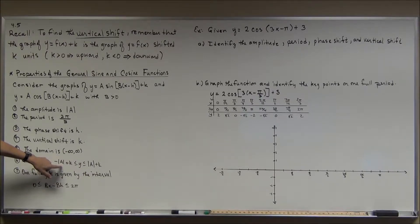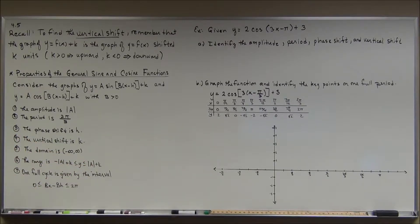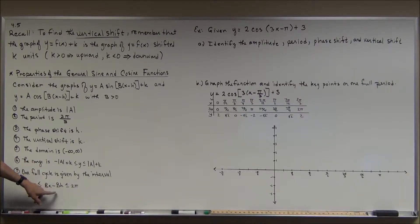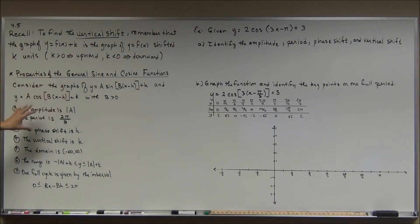The range is limited because there are highs and lows, and it has to do with the amplitude. The range is from negative |a| + k up to |a| + k. If you plug the numbers in, you'll see exactly what the range becomes. One full period of the graph is given by the x-values within a specific interval — you just have to solve for x there.